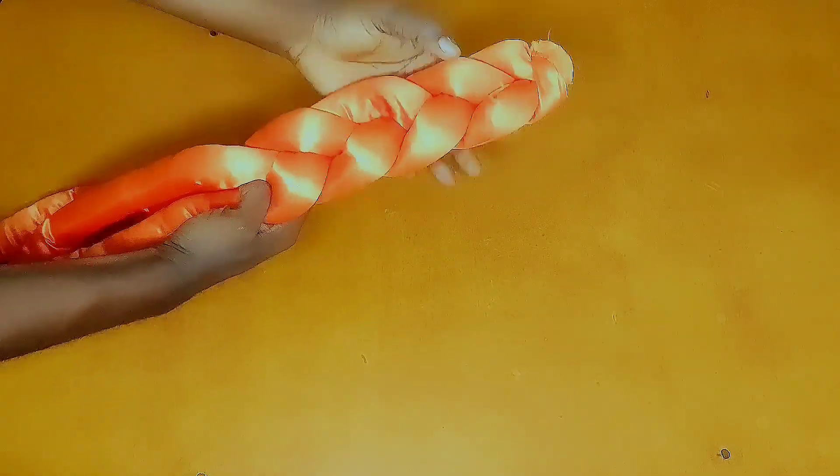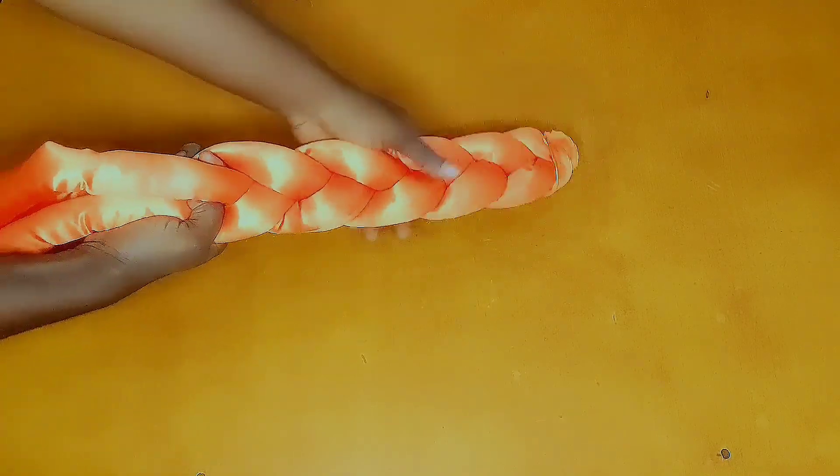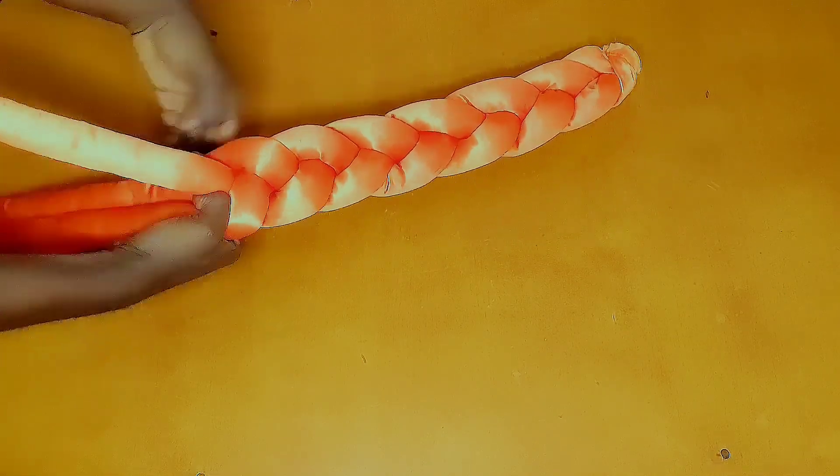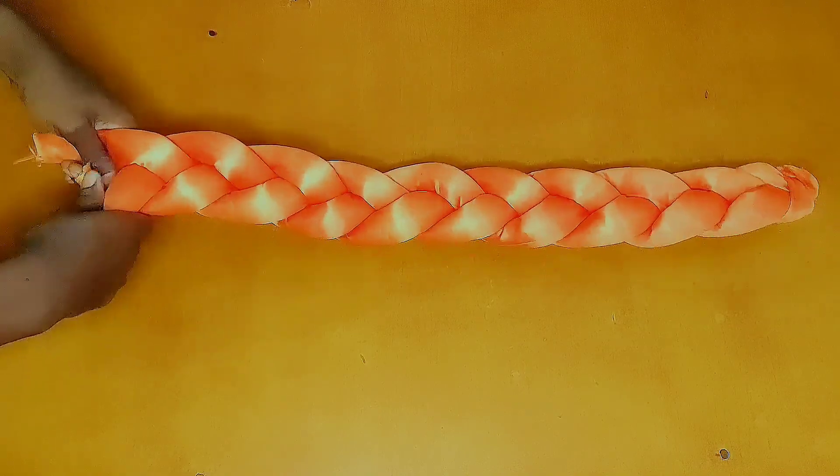I'm just going to take my time, adjust it and make sure that as you braid, the seam lines are not on the center of the headband. Make sure that the seam lines are along the two sides of the headband. I will just braid to the end.